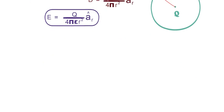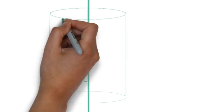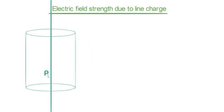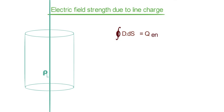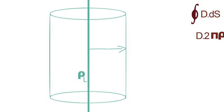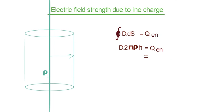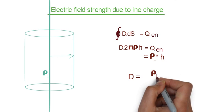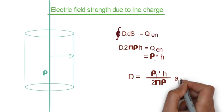In a similar manner, we can calculate the electric field intensity due to an infinite length line charge. If we have an infinite length line charge with linear charge density ρL, we can consider a cylindrical surface as the Gaussian surface. After applying Gauss's law, the closed surface integral of D equals Q enclosed, giving D into 2πρH equal to Q enclosed, where ρ represents the radius of the cylinder. The enclosed charge is found by multiplying the height of the line charge inside the cylinder by the linear charge density. After simplification, electric flux density D equals ρL divided by 2πρ, and the direction is radially outward.